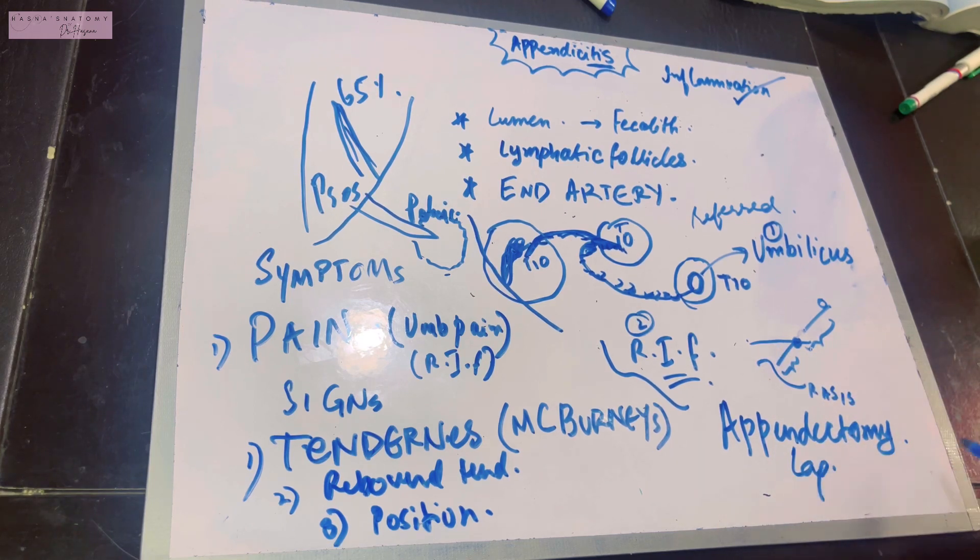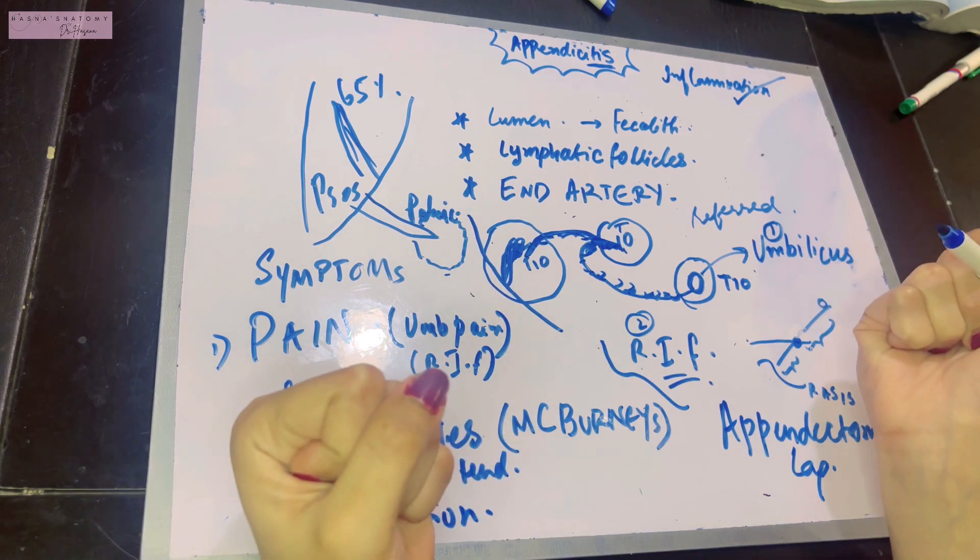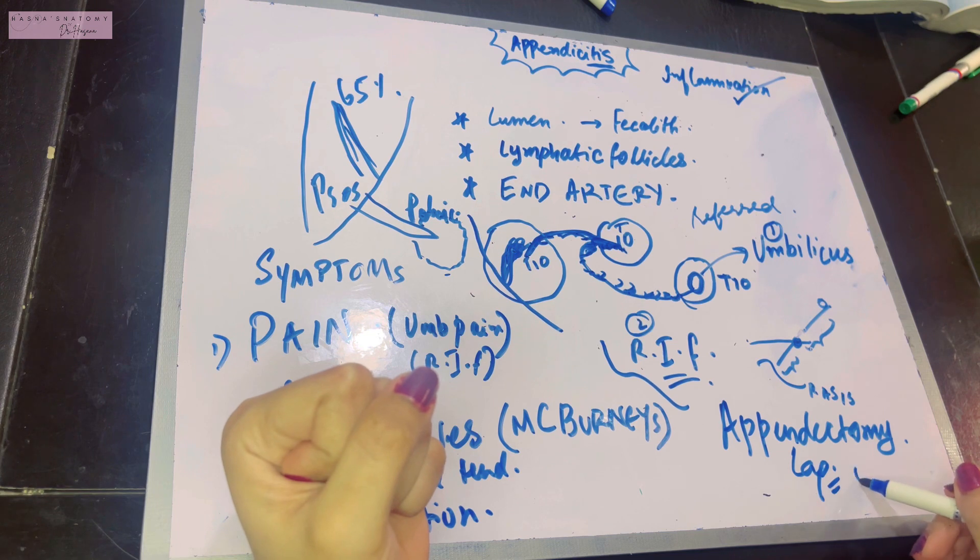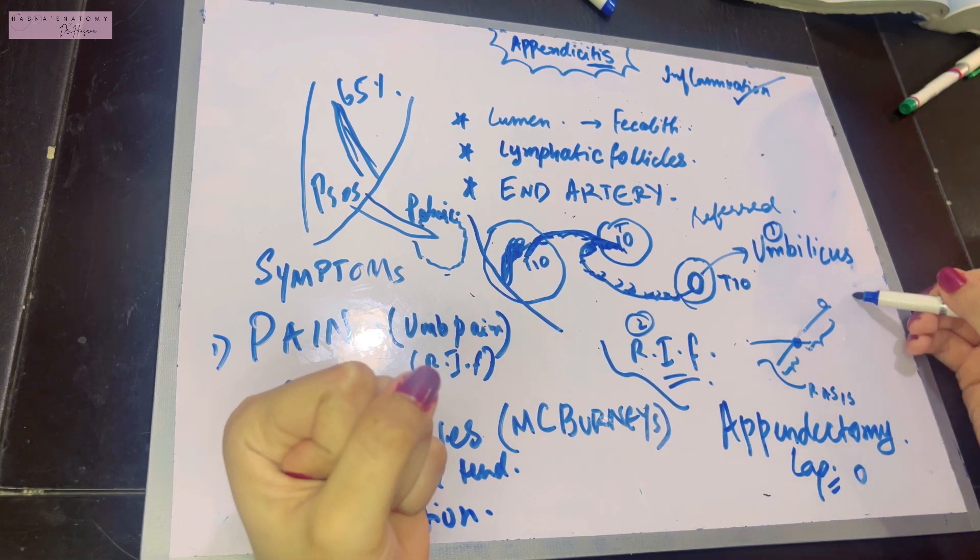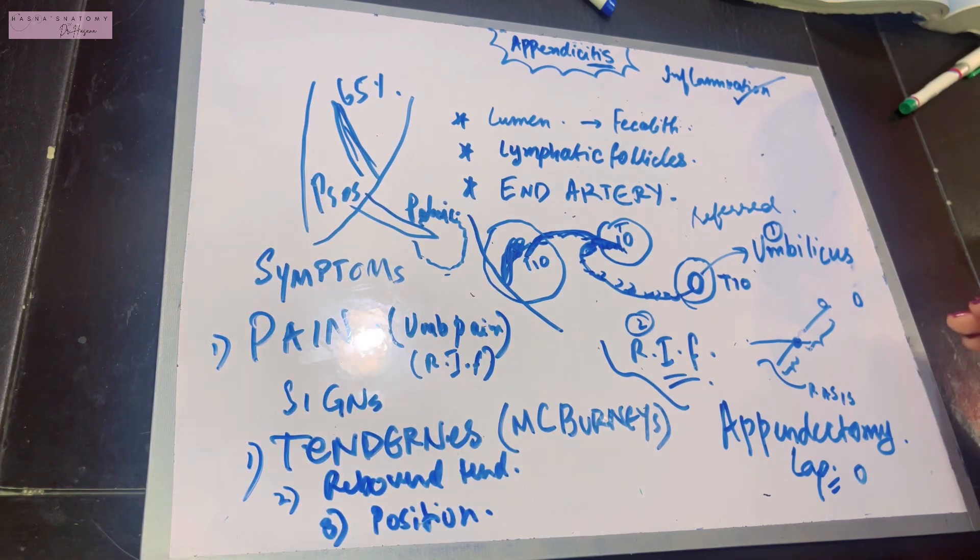A laparoscopic appendectomy means passage of cameras within your abdomen. The benefit is that you only need to make small holes, not more than two-centimeter incisions.